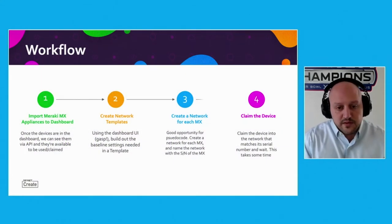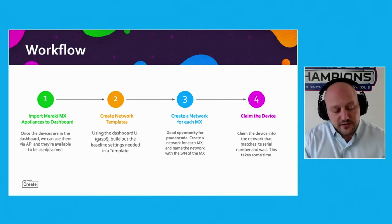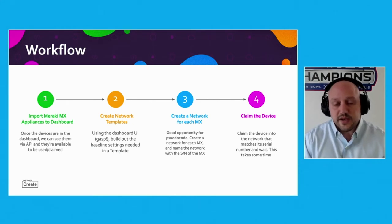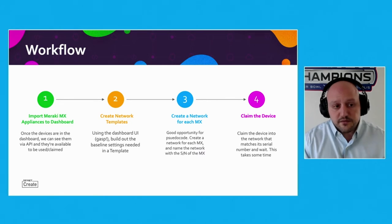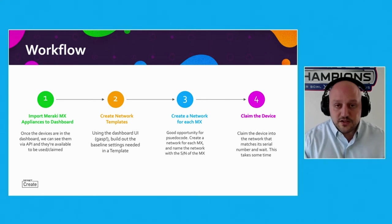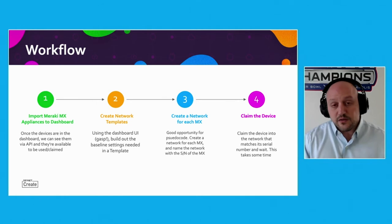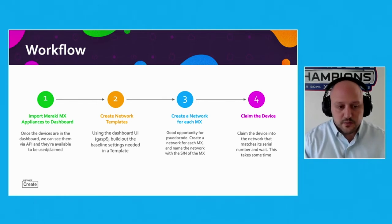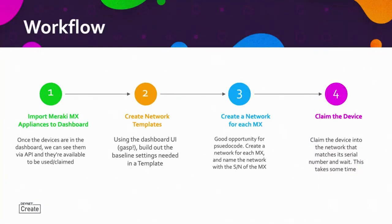From a workflow standpoint, this is how we solved it. The first thing was to make sure we had the right number of Meraki appliances. This particular deployment focuses almost exclusively on the MX appliance. Once you purchase those, they appear in your dashboard. In this case, we're not doing HA pairs because it's a seasonal business that's going to be spun up and spun down in a couple of months, so there's one Meraki appliance per site — somewhere in the range of 2,000 sites.